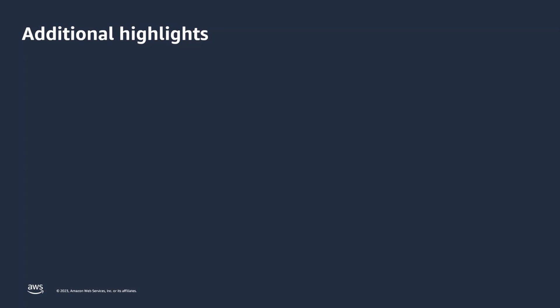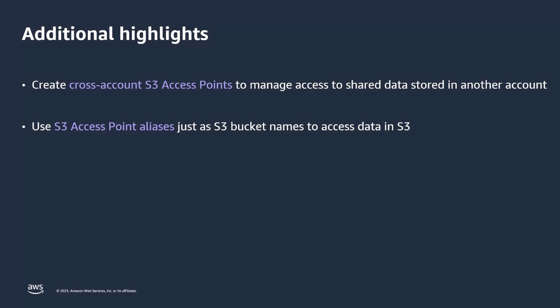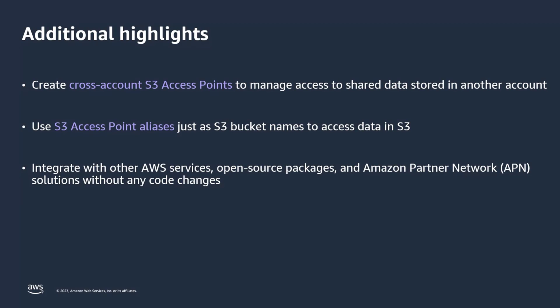Let's look at the key highlights of S3 access points. You can create cross-account S3 access points. These access points are created and owned by different accounts than the account that owns the associated bucket. Bucket owners can securely scale access management by delegating permissions to other trusted accounts and still authorize data access via access points created in these accounts. You can use an access point alias anywhere a bucket name is used today to perform object-level operations such as put, get, list, and more. You can use S3 access point aliases with various AWS services such as Amazon Redshift, Amazon EMR, Amazon Athena, Amazon SageMaker Feature Store, open source packages such as Apache Spark, Apache Hive, and Amazon Partner Network solutions without any code changes.